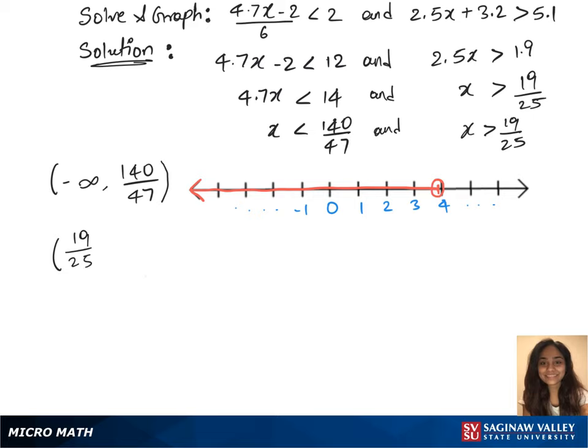We have our second interval notation which is 19 over 25 to infinity. We'll plot this on the graph, look for 19 over 25 and mark it. That is extending towards positive infinity.